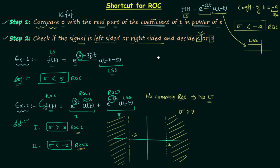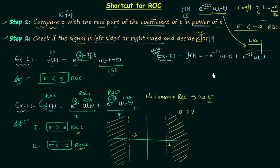Now moving to the third example: f(t) equals e^(-2t)·u(-t) plus e^(-3t)·u(t). This problem is a homework problem. You need to find the common region of convergence, and once you have your answer, post it in the comment section. Practice the shortcut method well, as we will use it in the coming examples.